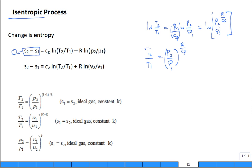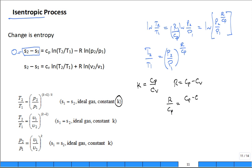There's a relationship between R, C_P, and C_V. We recall K is equal to C_P over C_V. And R is C_P minus C_V, so R over C_P equals C_P minus C_V over C_P, which simplifies to K minus 1 over K. So T2 over T1 equals P2 over P1 to the power of K minus 1 over K.